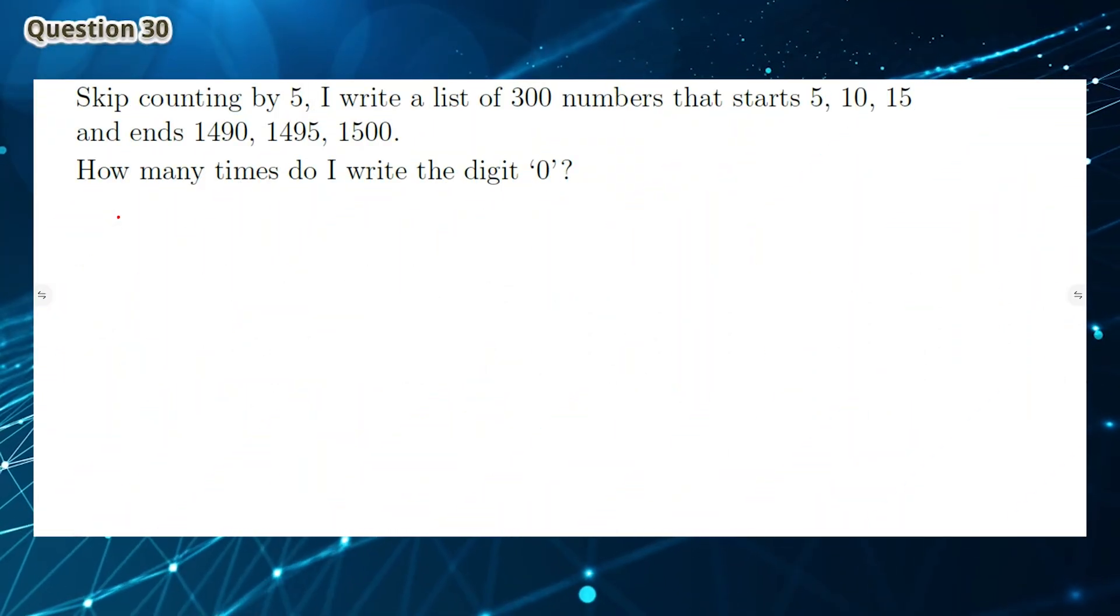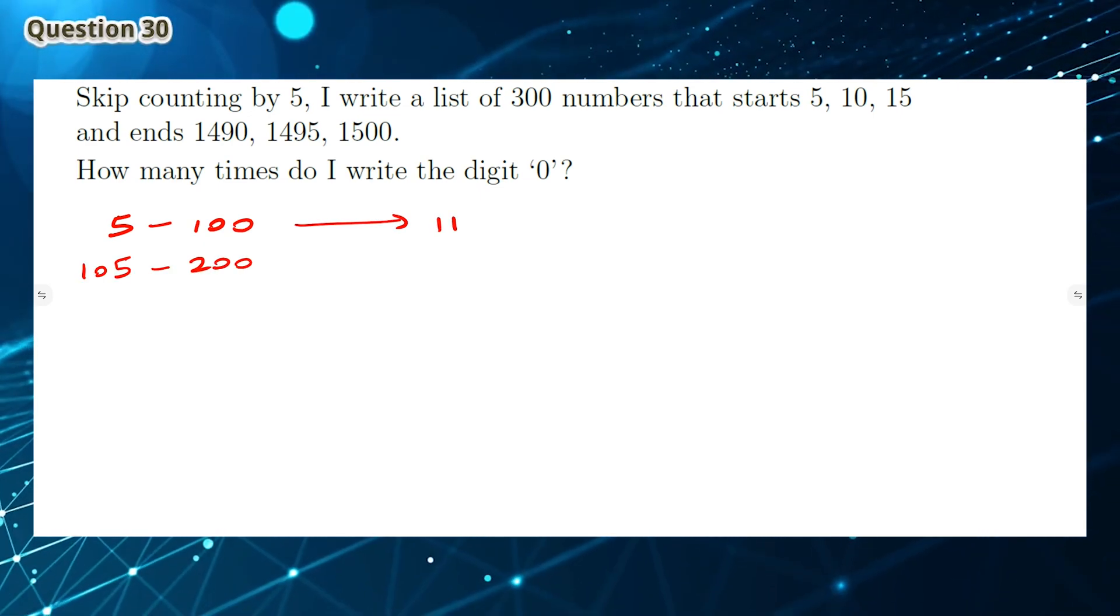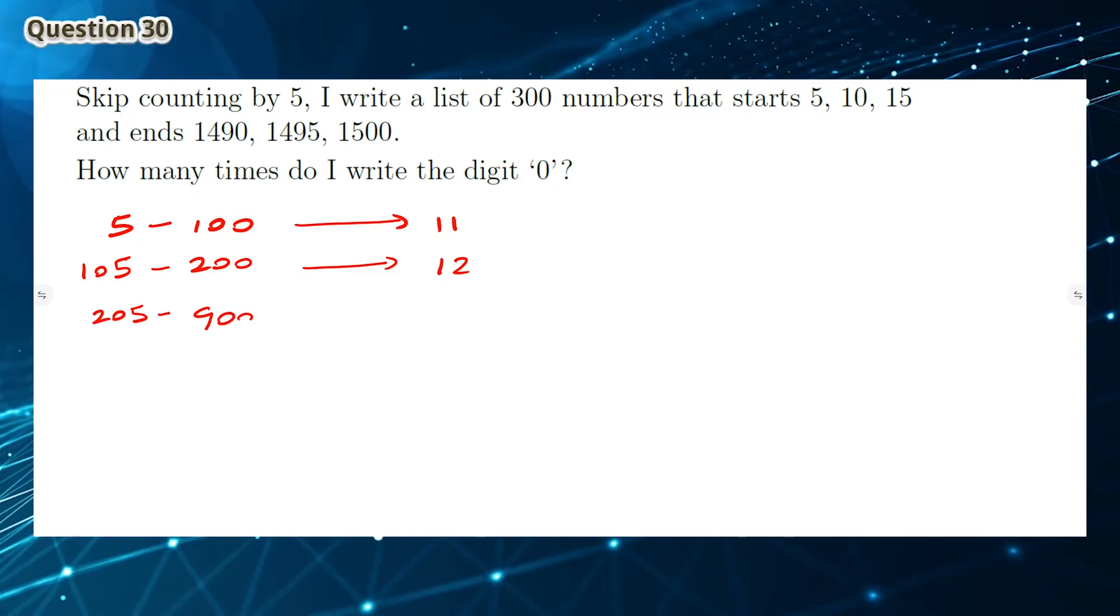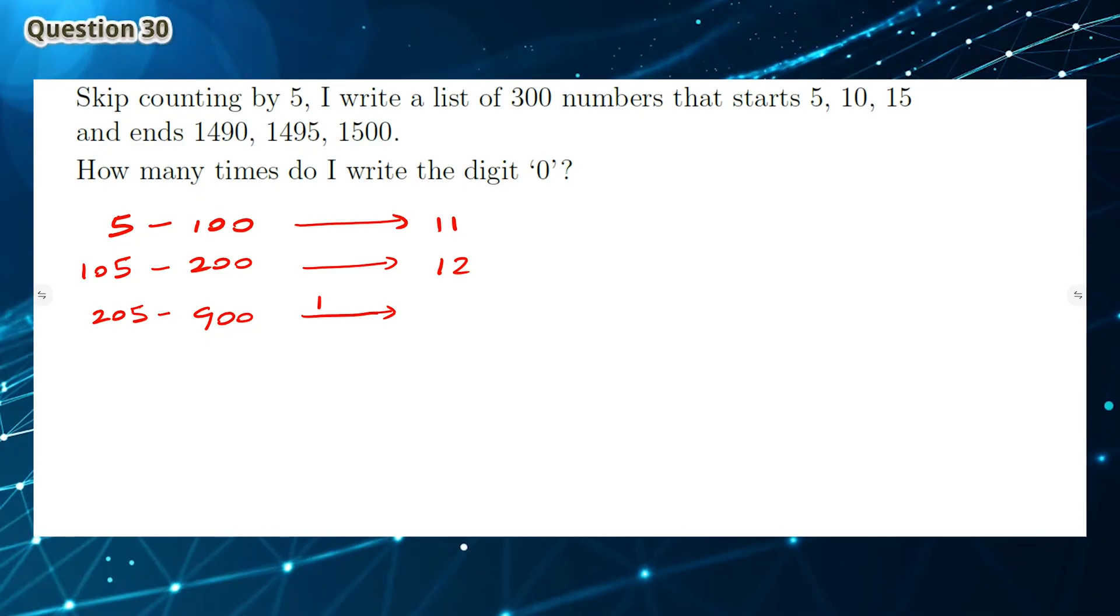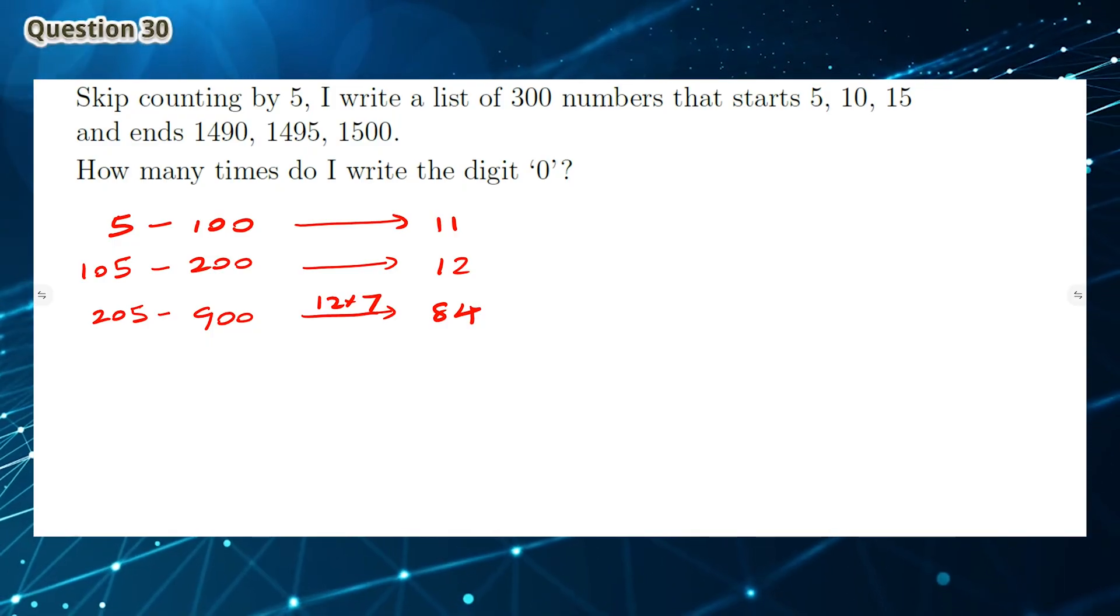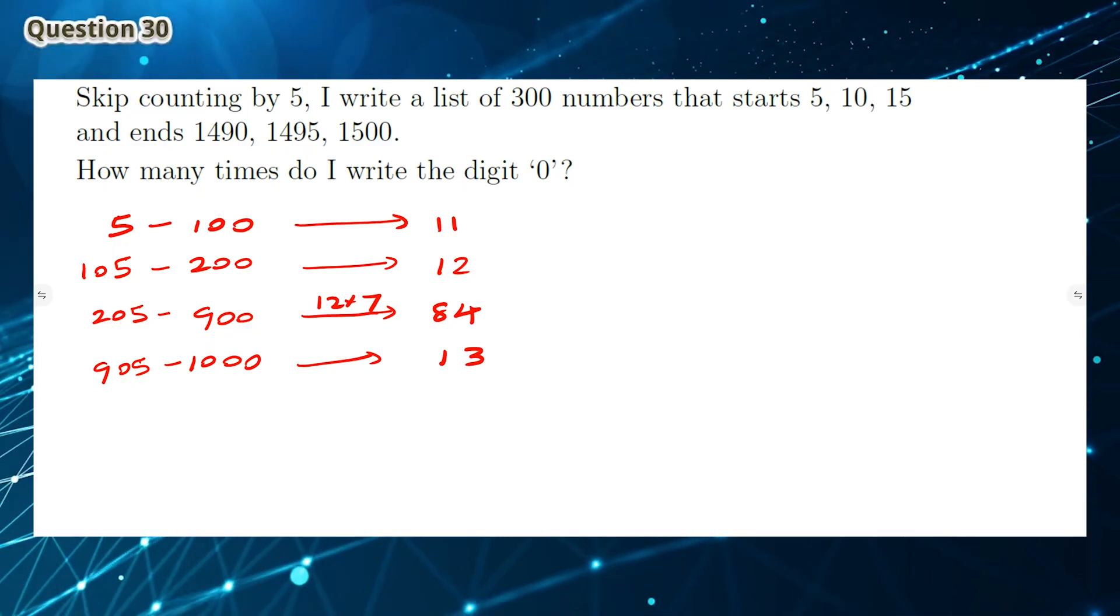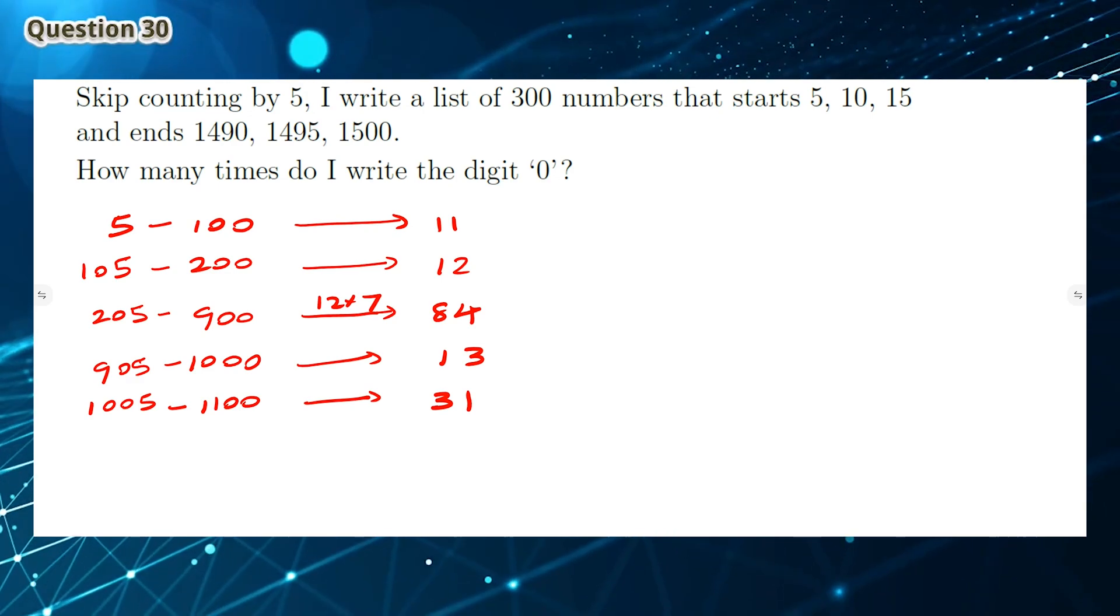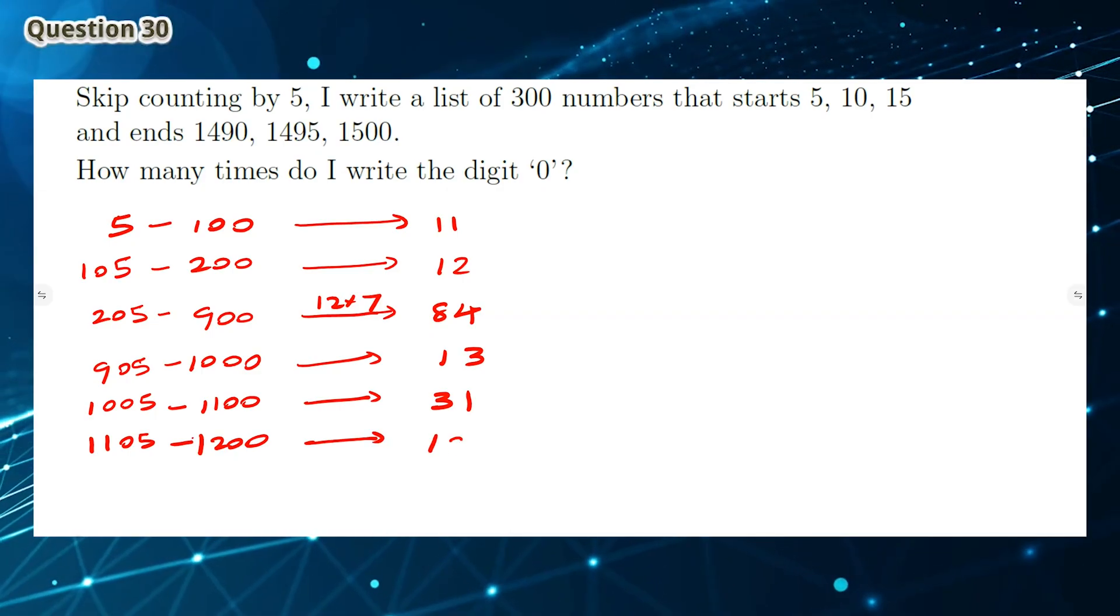Question 30: From the numbers 5 to 100, you write the digit 0 eleven times. And from the numbers 105 to 200, you write it 12 times. From 205 to 900, you basically write the same thing for 105 to 200, but instead you do this 7 times, which gives a total of 84. Between 905 to 1000, you write the digit 0 thirteen times. And between 1005 to 1100, you write it 31 times.